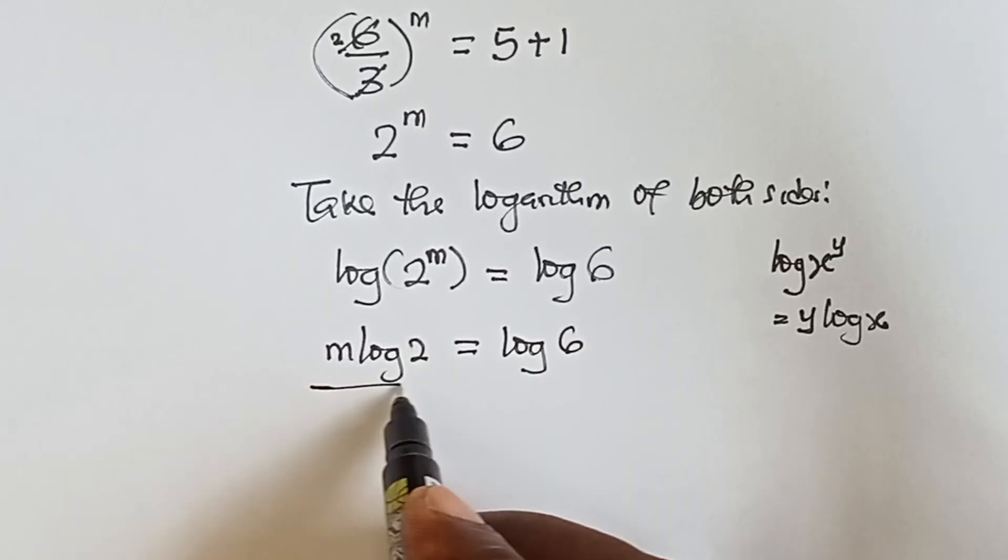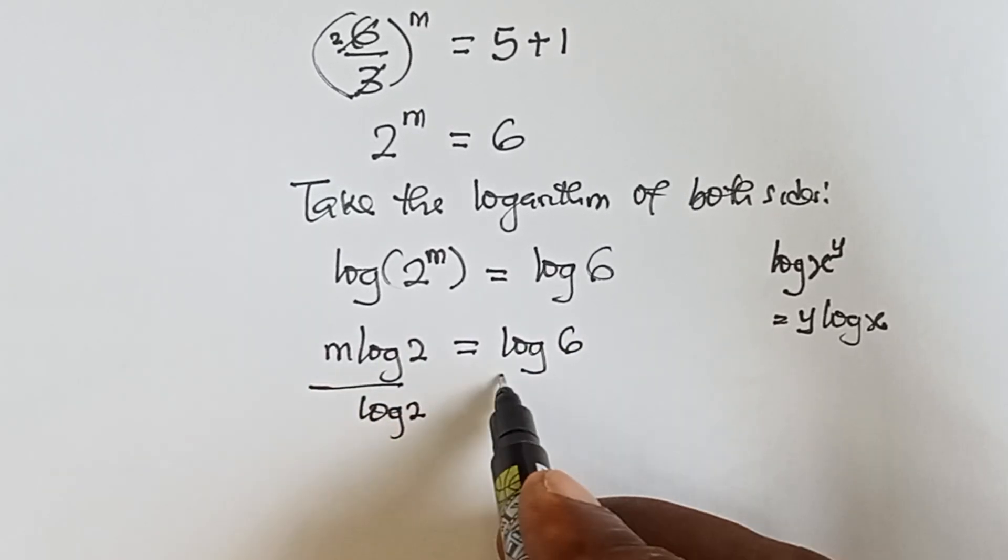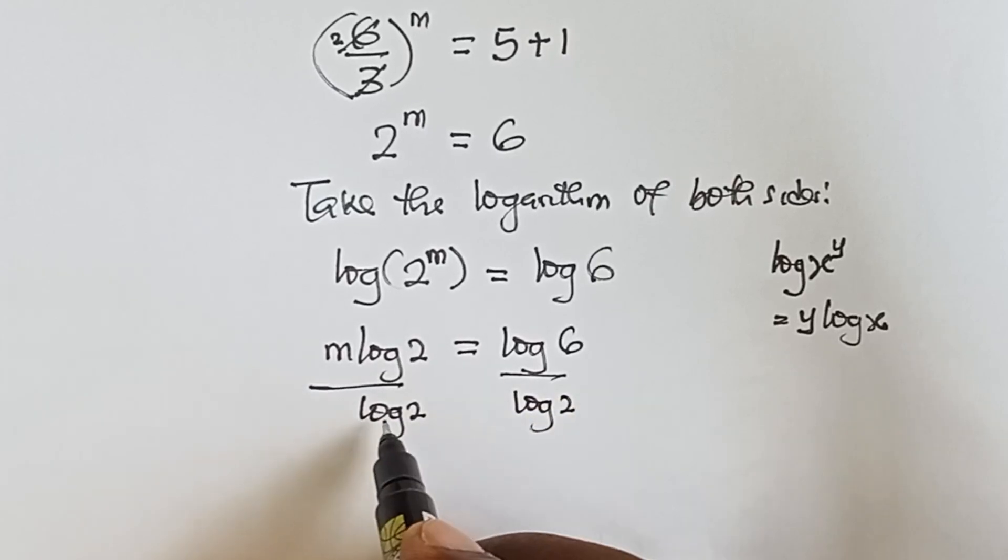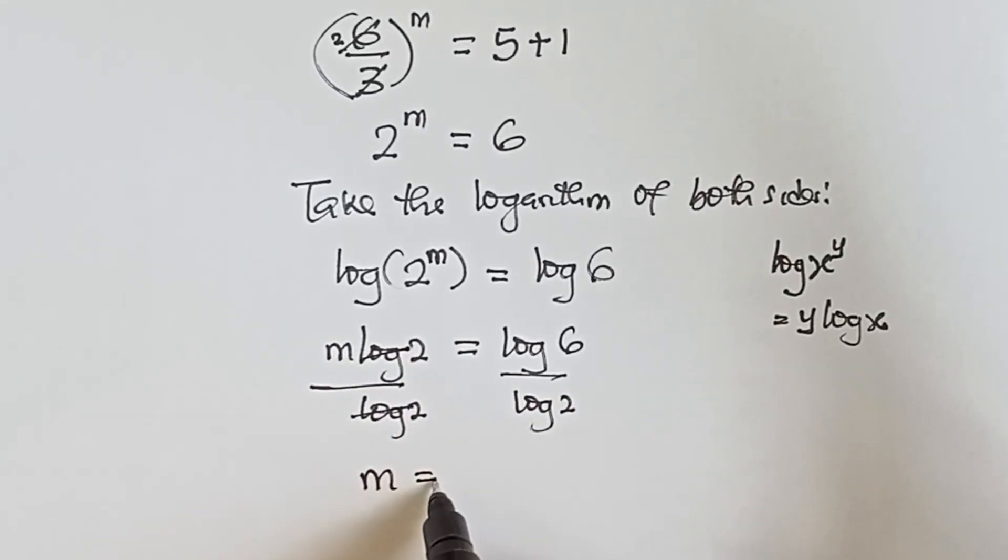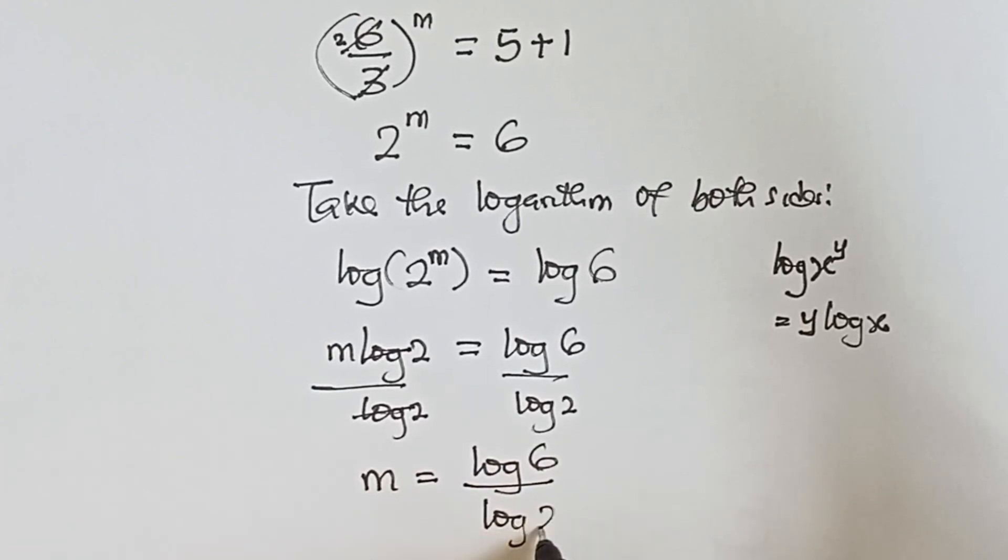For us to find m, we divide both sides by log 2. We divide both sides by log 2, cancel this log 2, and we have m equals to log 6 over log 2.